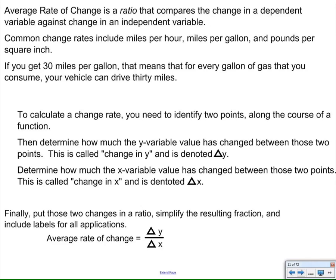So in order to calculate rate of change, these are the steps that you need to follow. First, you need to identify two points along the course of a function. So if you have any two points in time, you can calculate an average change rate between the points in time. Then you determine how much the y-variable has changed. We call that change in y. We use the triangle to represent change. Then you figure out how much the x-variable has changed. And you call that change in x. And you simply put them together in a ratio. Nothing more to it than that.